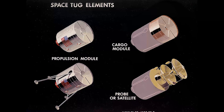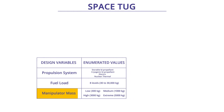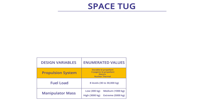An example design vector for the space tug includes three elements. The first is manipulator mass, which specifies the size of the payload, measured in kilograms, and has four discrete levels — chosen to drive the capability attribute. The second design variable is propulsion type, a categorical variable that includes storable biprop, cryogenic biprop, electric, and nuclear thermal. The propulsion type was chosen to drive the delta-V and response time attributes.